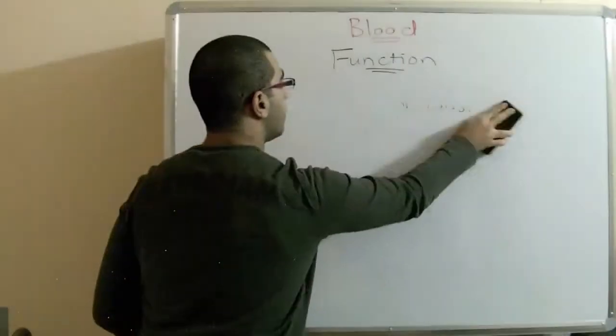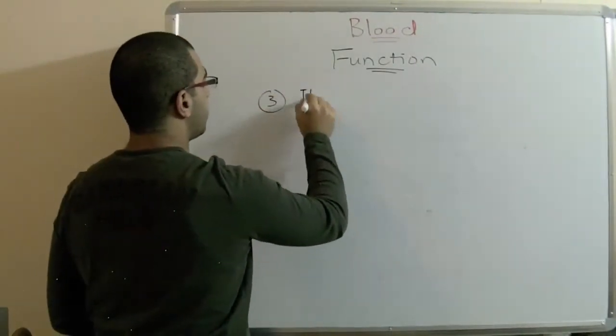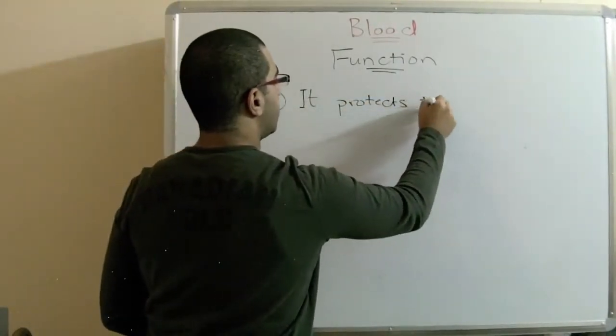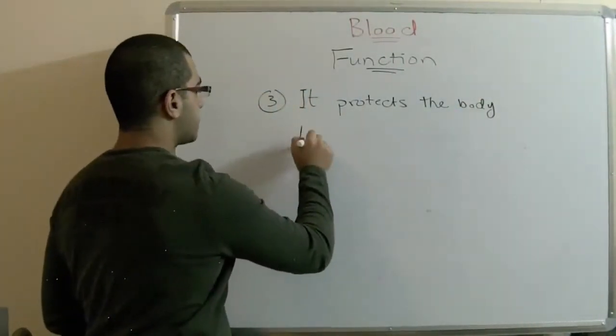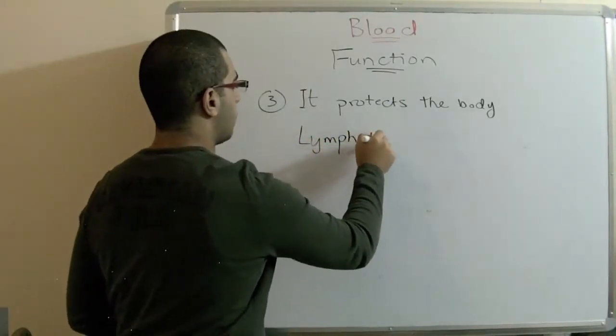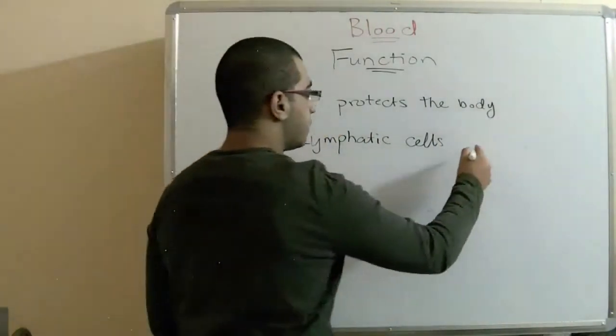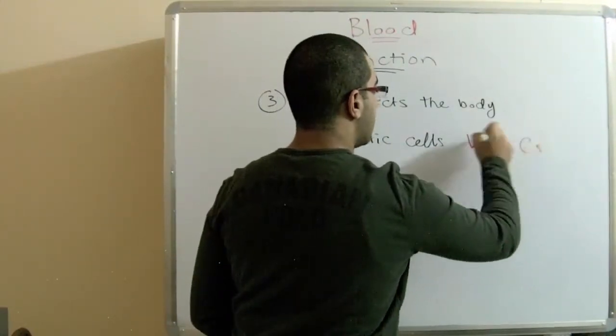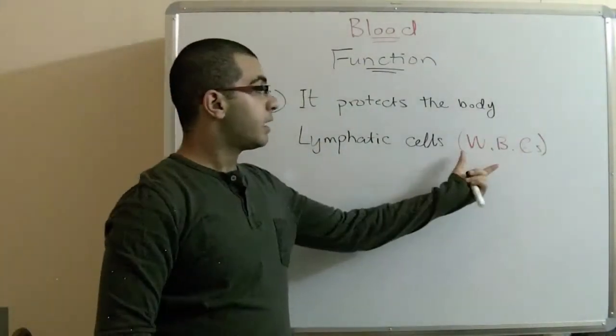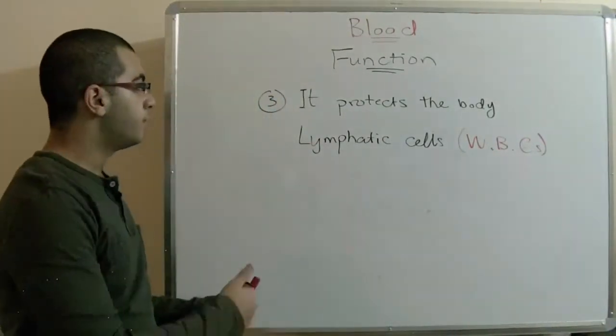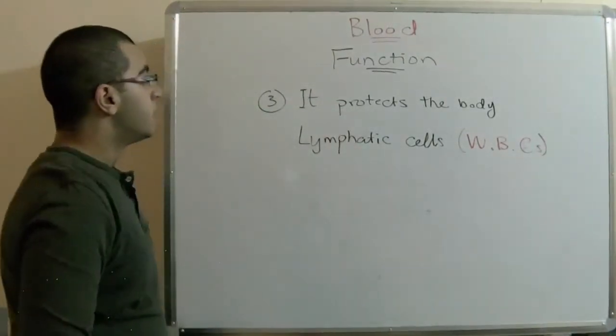The third function is that it protects the body through the lymphatic products or the lymphatic cells. As we have mentioned, from the blood constituents, the main blood constituents are the white blood cells, or the leukocytes, which are found inside the blood. They are formed from the lymphatic system and they engulf the microbes. They protect the body through producing antibodies against the foreign molecules. And so it protects the body.